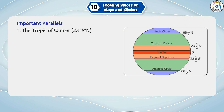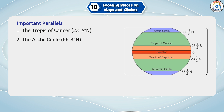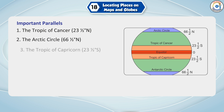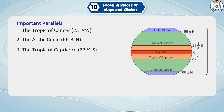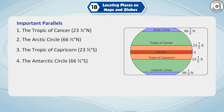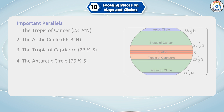Other than the equator (0 degrees), the north pole (90 degrees north) and the south pole (90 degrees south), there are four other important parallels: 1. The Tropic of Cancer at 23.5 degrees north; 2. The Arctic Circle at 66.5 degrees north; 3. The Tropic of Capricorn at 23.5 degrees south; 4. The Antarctic Circle at 66.5 degrees south.